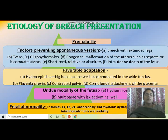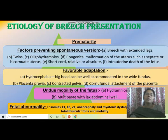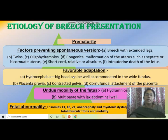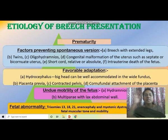Favorable adaptation occurs due to hydrocephalus — the big head can be well accommodated in the wide fundus. Also, placenta previa in the lower segment means the fetal head cannot accommodate there, so it goes up to the fundus. Contracted pelvis and cornuofundal attachment of the placenta are also favorable causes. Undue mobility of the fetus is due to hydramnios — the baby moves freely when fluid is more, and also with lax abdominal walls.